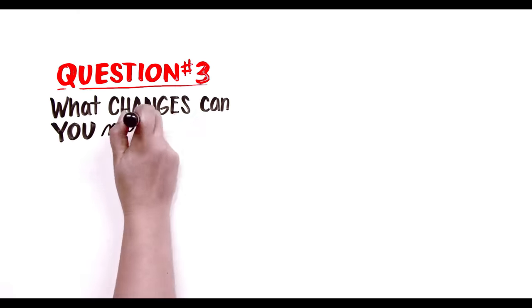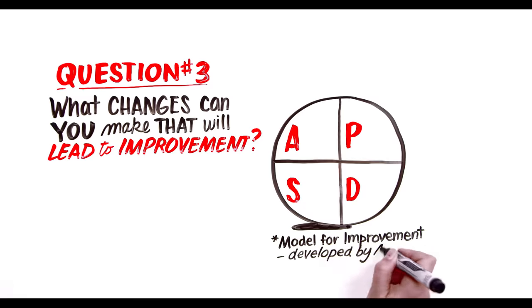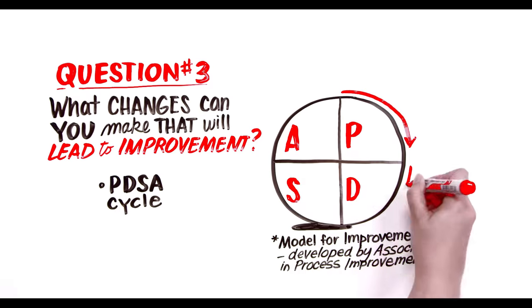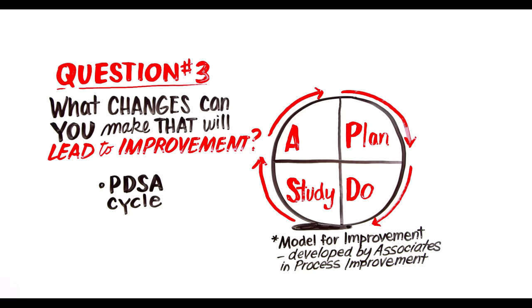Next up is question three: what changes can you make that will lead to the improvement? To start, we just want to test one change with something called a PDSA cycle. Plan the test, do the test, study the test results, and then act based on those results.